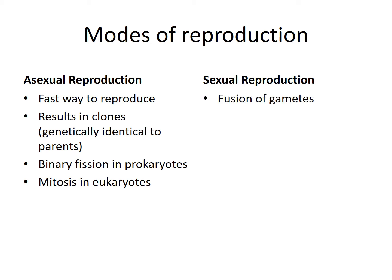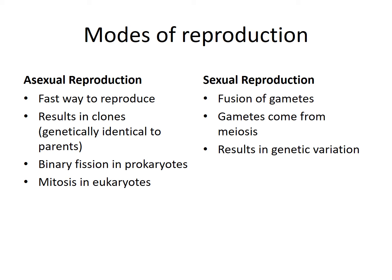Sexual reproduction is the result of a fusion of gametes — the male sperm and the female egg. Gametes come from a process in eukaryotes called meiosis. Meiosis starts with a diploid cell that divides two times and ends up with haploid cells — four haploid cells to be precise. The key thing about those haploids is that they are genetically unique, which causes genetic variation. Offspring created through genetic variation might be more fit for survival.